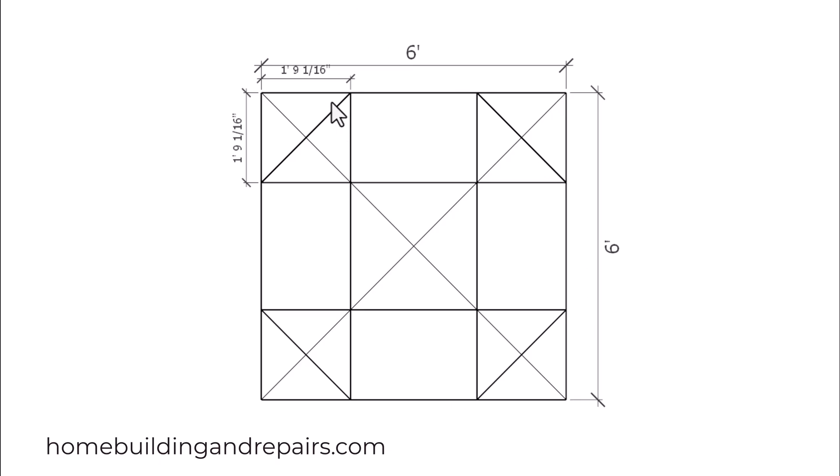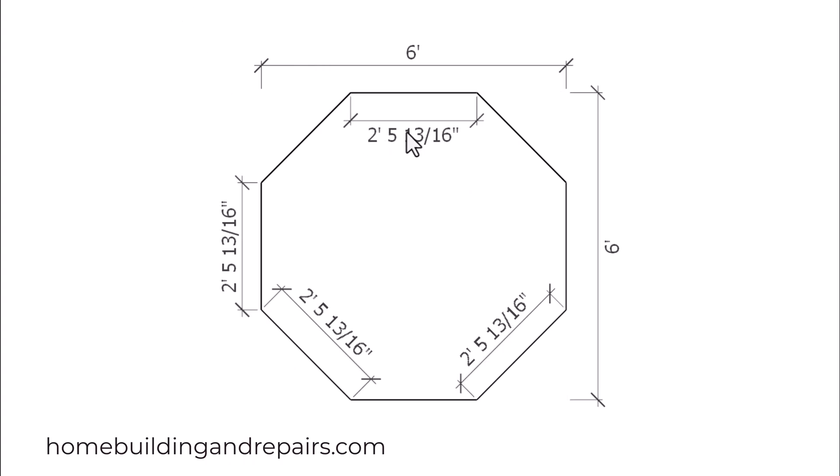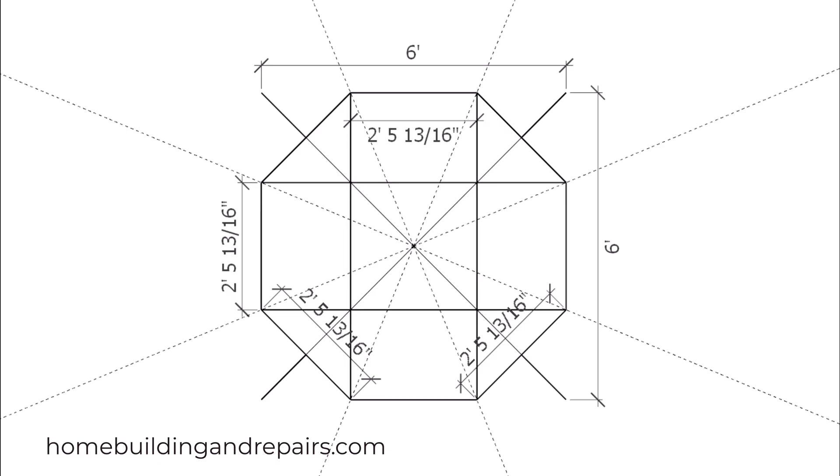Then we're simply going to connect each one of these points here with a line. I would do one section first, this section and this section, so that I could check this measurement and this measurement to make sure that they're the same. If not you might need to make some adjustments. If your measurements are the same on each one of these then you would have laid out a perfect octagon.